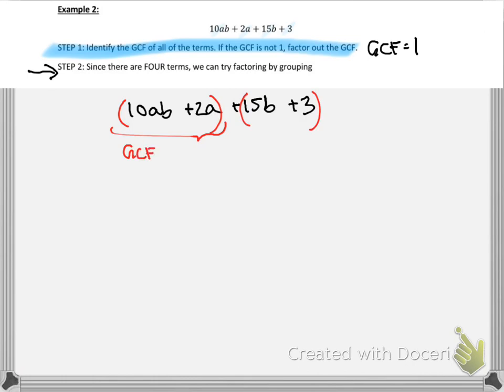And then grouping literally means just throwing the first two together and then throwing the second two together. So what is our GCF here? What's the biggest term that goes into both 10AB and 2A? If you said 2A, then you are correct. That is our GCF. To figure out what's left over on the inside, remember we can divide both terms by 2A. So 10 over 2 is 5, and the A's cancel out. So we're left with 5B. Here, 2A divided by 2A is 1.